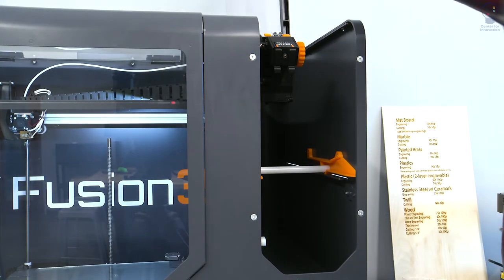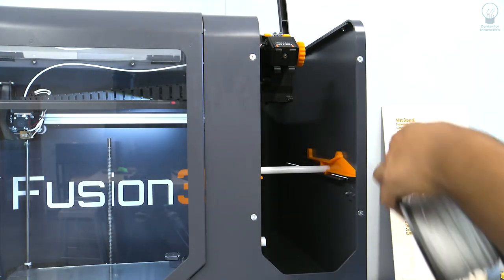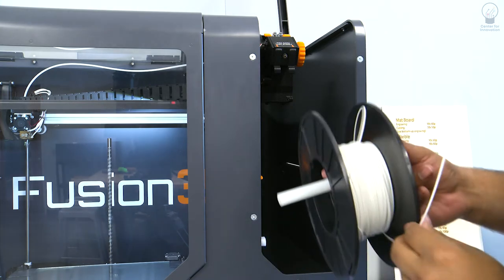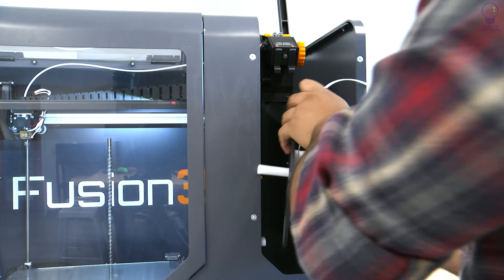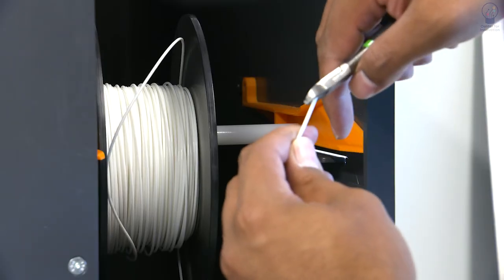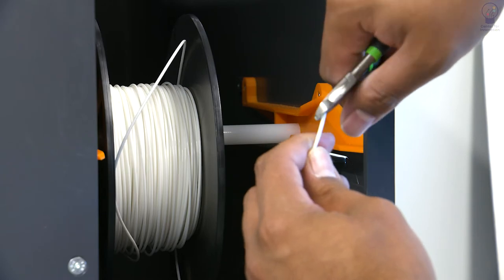To load the filament, open the screen and put the roll on the roller and carefully slide it in place. Cut the tip of the filament diagonally like a flower stem.